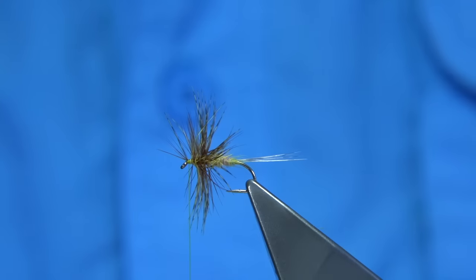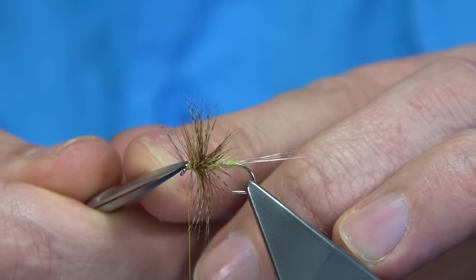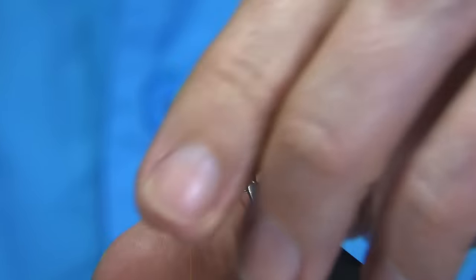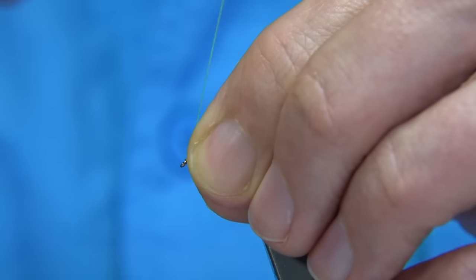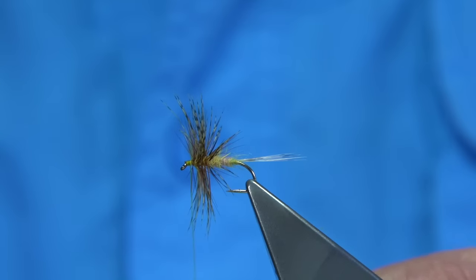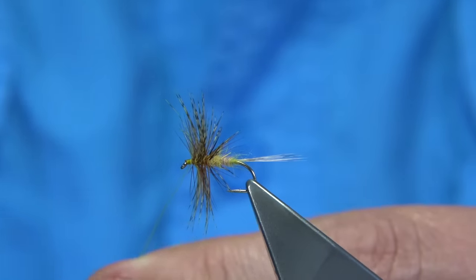Anything going forward, we can hold back with the thread turn. If they're too small or too short and stuff, we can actually trim them away. Tidy these up. Tidy the head area up. And then we can whip finish.